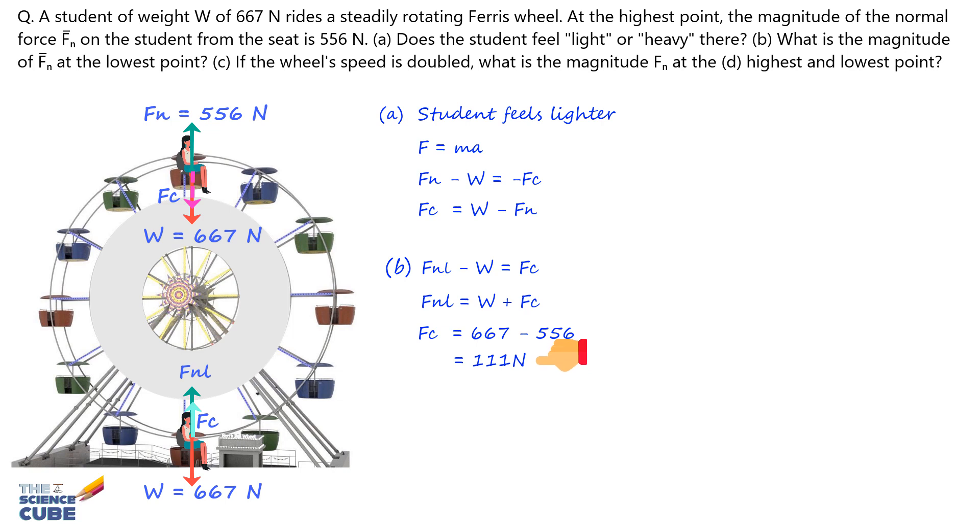Using this result, we get at the lowest point, Fn equals 667 Newtons plus 111 Newtons, which equals 778 Newtons. That is, the student will feel heavier because the normal force is greater than the weight now.